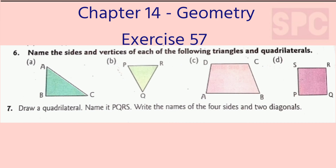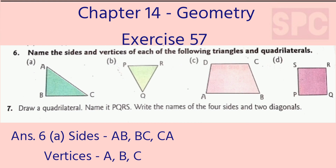Question 6: Name the sides and vertices of each of the following triangles and quadrilaterals. Part A: This is the figure of triangle ABC. The sides of this triangle are AB, BC, and CA. You can write the sides as AB or BA — both are the same. The vertices of triangle ABC are vertex A, vertex B, and vertex C.